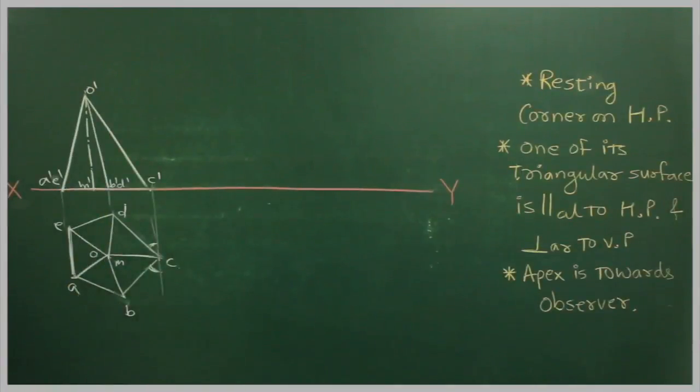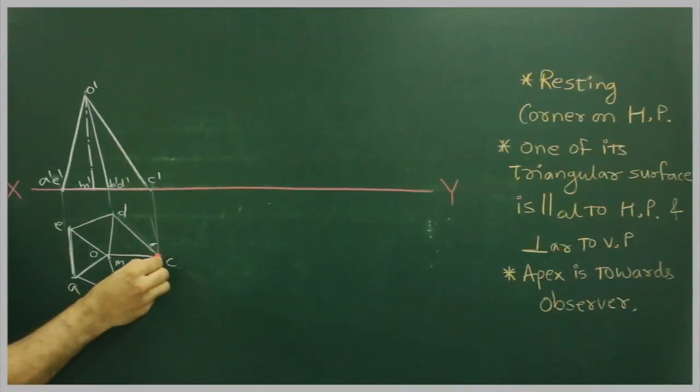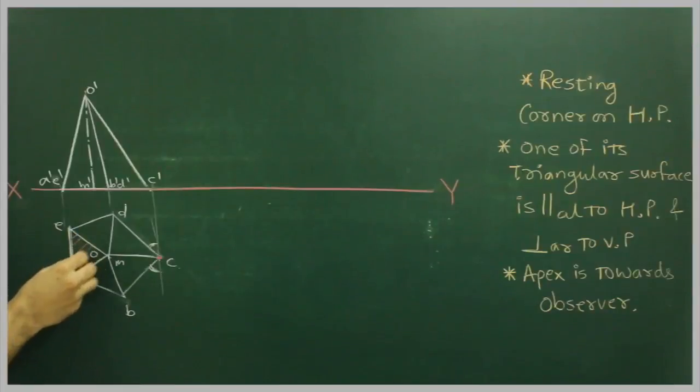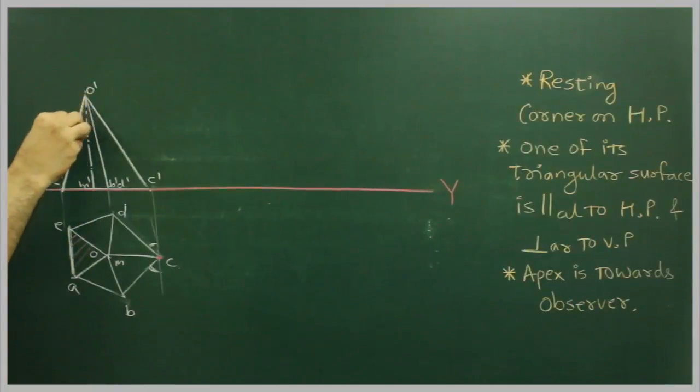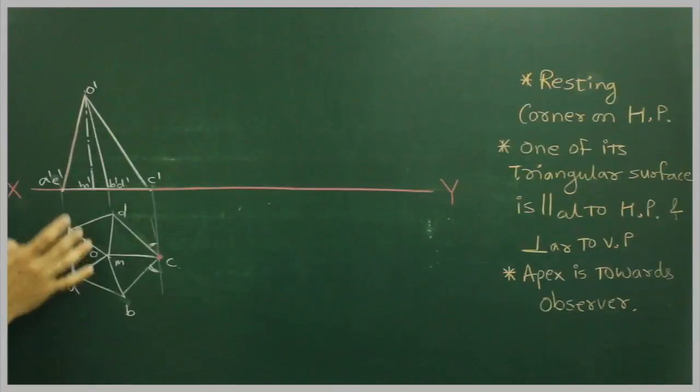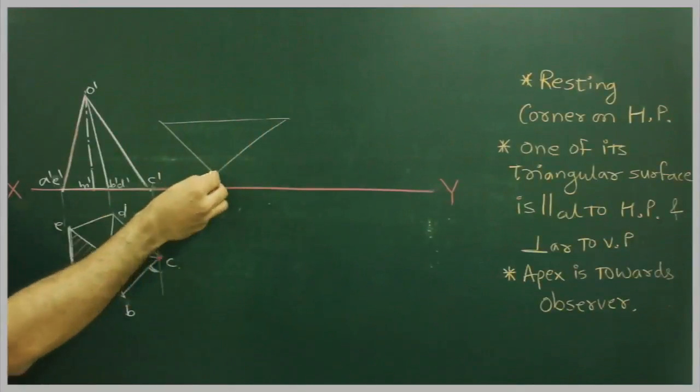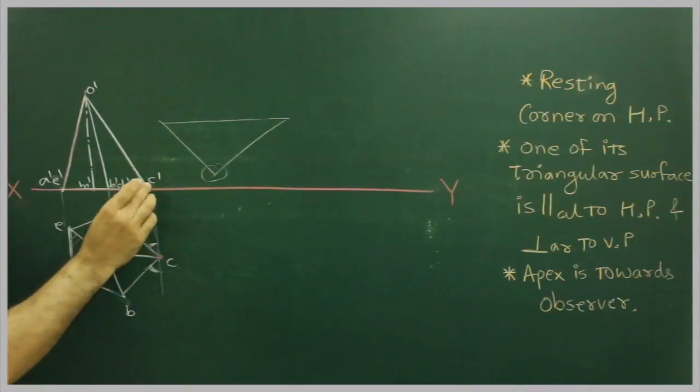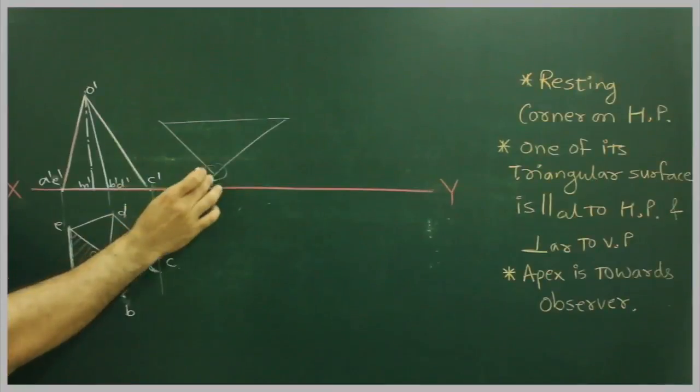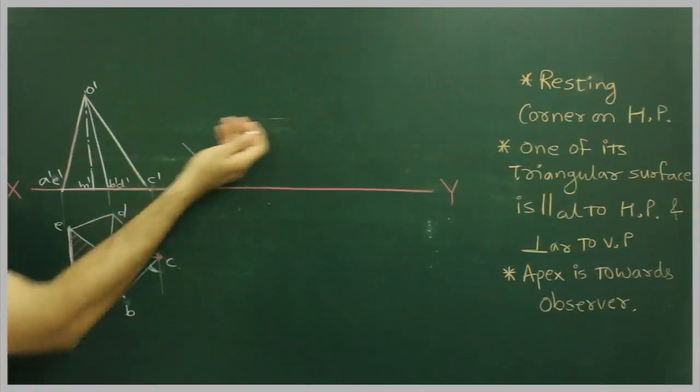Now one of its triangular surfaces parallel to HP. So if this is the resting corner, this is the triangular surface which will appear as a line, right? So now we want this triangular surface parallel to HP. So what we need to do, we need to draw horizontal line, but the only problem we will face is we are not sure about point C'. It has to be an XY line.